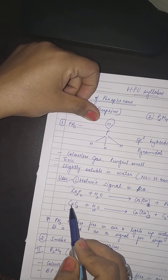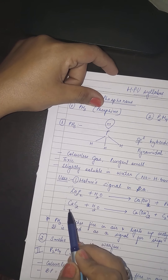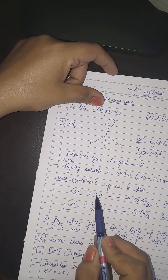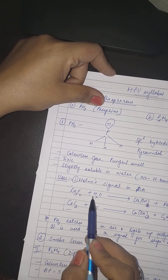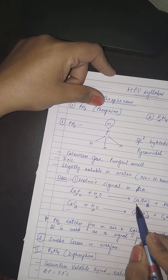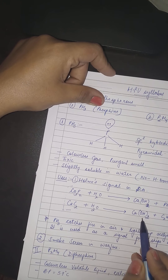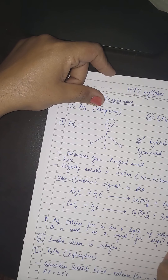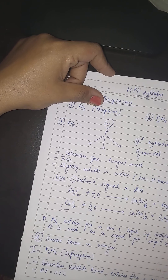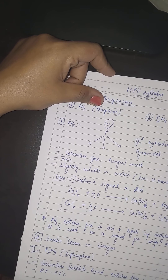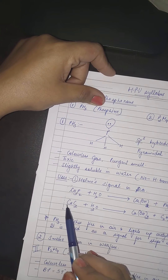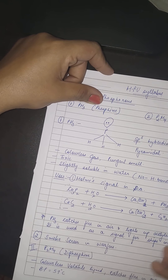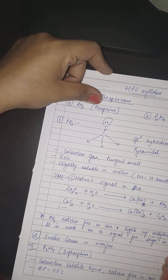Holmes signal ke liye calcium carbide aur calcium phosphide ka mixture liya jaata hai aur use samudr ke paani (sea water) mein daal diya jaata hai. Yeh dono sea water ke saath react karte hain: calcium phosphide se phosphine (PH₃) ban jaati hai, aur calcium carbide se acetylene (C₂H₂) ban jaati hai.